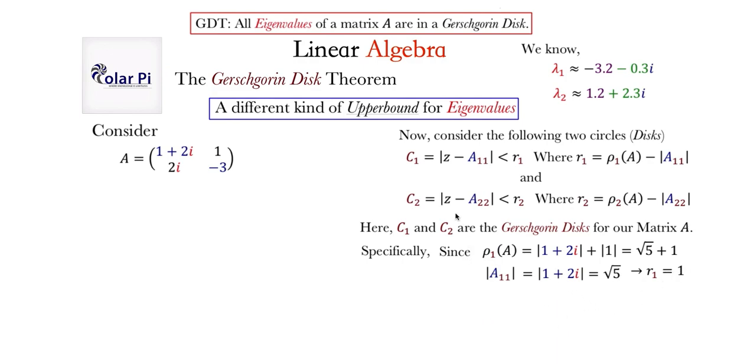So then our first circle or our first Gershgorin disk is a circle centered at A11 in the imaginary plane, with radius one. And if you similarly calculate R sub 2 based on the definition, then you should find that R sub 2 is two. We know that A22 is this entry here. And so we know what everything is, and so we can plot our two Gershgorin disks.